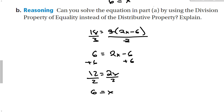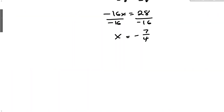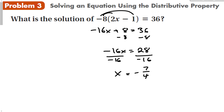This method works well if the term on one side happens to be divisible by the factor. If it's not, it's probably better to use the distributive property. In the first problem, I could have tried to divide by negative 8, but 36 is not divisible by 8, so that doesn't make the problem any easier. Use the division property if the number on the other side is actually divisible by what you want to distribute.